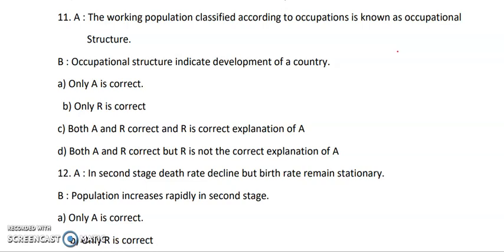Question 11 — Assertion: The working population classified according to occupations is known as occupational structure. Reasoning: Occupational structure indicates the development of a country. Both statements are correct — if the working population is more, GDP and per capita income will be more, leading to development. However, statement R is not giving the correct explanation for A, so option D is the right answer.